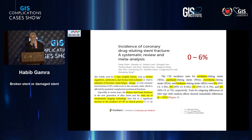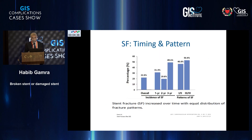How frequent do we see stent fracture? In the beginning, people did not look for it, but now because we are using imaging more and more, we can see that the incidence is between 0 and 6 percent, depending on the type of stent and anatomy. As for timing, after three years you have more risk of stent fracture, which is more related to metal fatigue. The pattern is roughly half and half: 50 percent Type 1 and 2, and 50 percent approximately Type 3 and 4, which is a more deformed stent pattern.